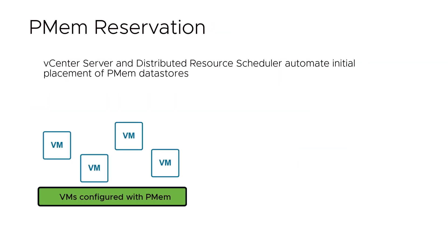vCenter Server and Distributed Resource Scheduler automate initial placement of PMEM data stores. This automation saves time and provides the ideal placement for the data stores, which is especially useful when using PMEM with legacy systems.